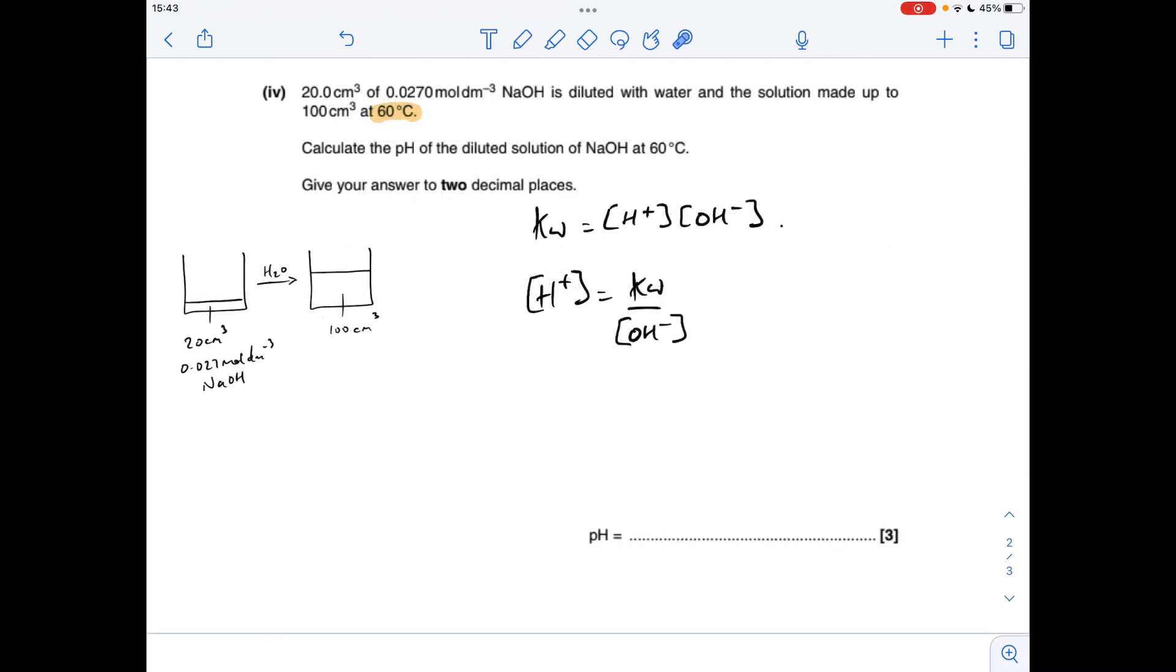Finally, this calculation to calculate the pH of this diluted sodium hydroxide solution at 60 degrees C. That's really important. So one of my trusty diagrams first, just to explain what's going on. So they're taking 20 cm cubed of 0.027 moles per decimetre cubed sodium hydroxide. It's a strong alkali. And they're adding water to it and making it up to 100 cm cubed.